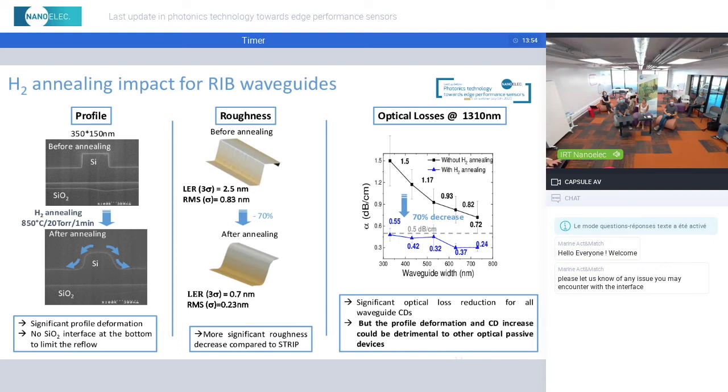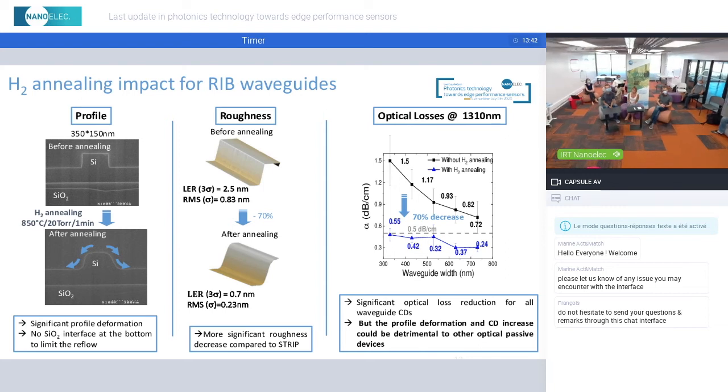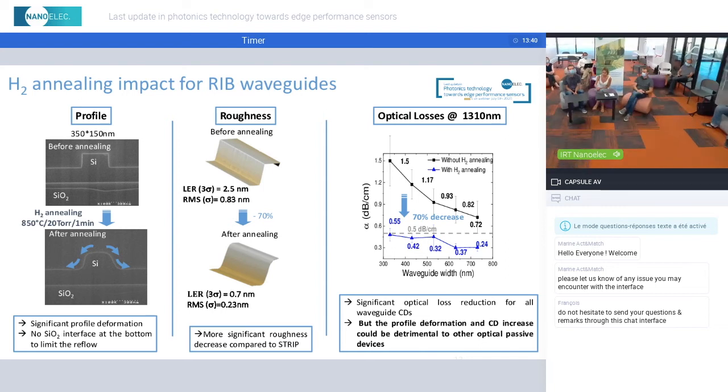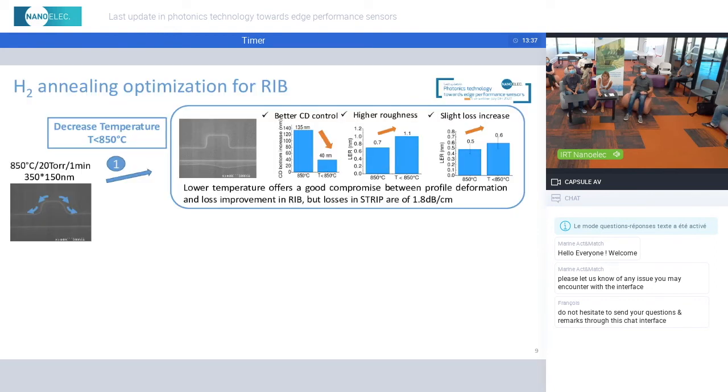However, this profile deformation is an issue and can compromise performance for some other optical passive devices present on the wafer. So we have to find a compromise between profile deformation and loss decrease. We have tried to optimize this annealing treatment on RIB structures.